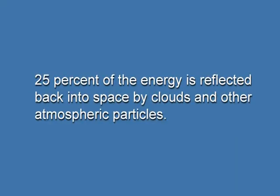The greenhouse effect results from the interaction between sunlight and the layer of greenhouse gases present in the earth's atmosphere, which extends up to 100 km above the earth's surface. Sunlight is composed of a range of radiant energies which make up the solar spectrum, including visible light, infrared light, gamma rays, X-rays, and ultraviolet rays. When the sun's radiations reach the earth's atmosphere, 25% of the energy is reflected back into space by clouds and other atmospheric particles.